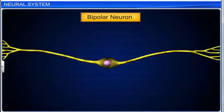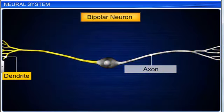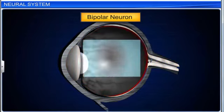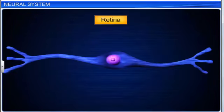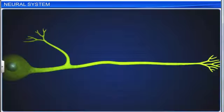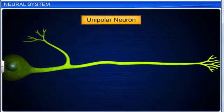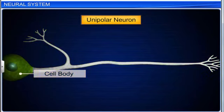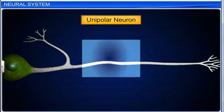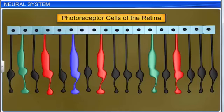Bipolar neurons, with one axon and one dendrite, are found in the retina of the eye. Unipolar neurons have a cell body with one axon only, and are found in the photoreceptor cells of the retina.